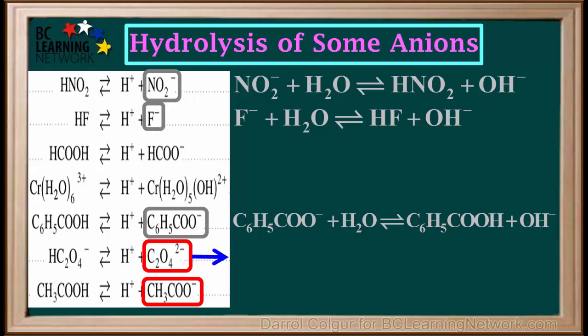Now we'll do the oxalate ion, C2O4^2-. C2O4^2- reacts with water, removing just one proton from it. In equations for hydrolysis reactions, we always remove only one proton at a time.